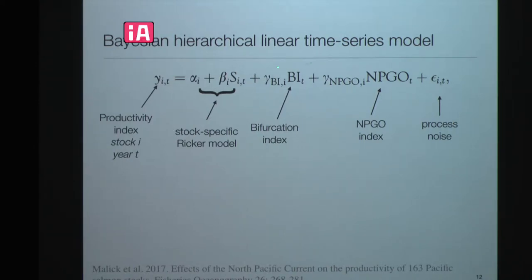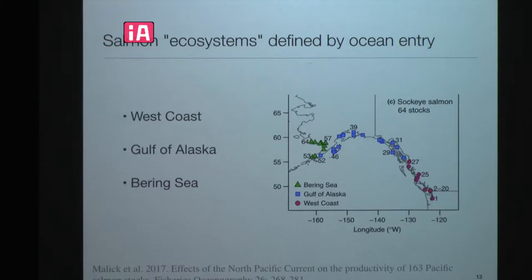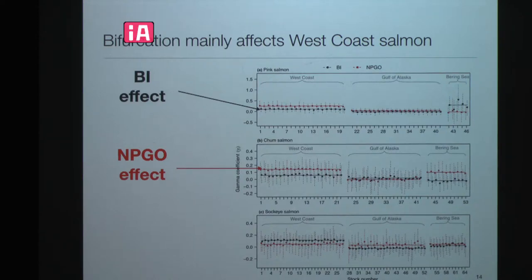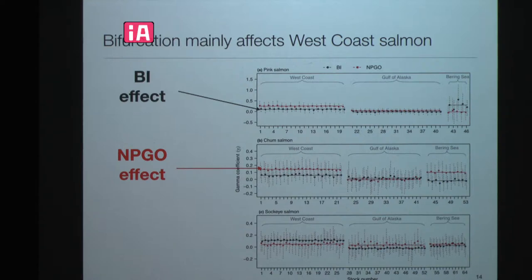We grouped stocks into different ecosystem types depending on where they entered the ocean — the west coast (mostly British Columbia and Washington), the Gulf of Alaska, and the Bering Sea. We did this for three species: pink salmon, which live for two years and are mostly oceanic; chum salmon, also more oceanic; and sockeye, which are kind of half and half — spending half their life in freshwater and half in saltwater.